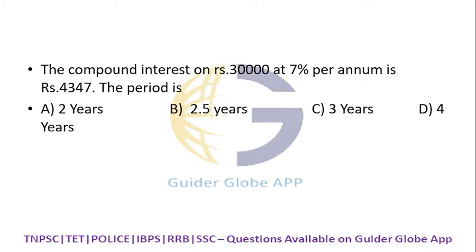The compound interest on 30,000 at 7% per annum is 4,347. We need to find the number of years. For 30,000 at 7%, the first year interest is 2,100.